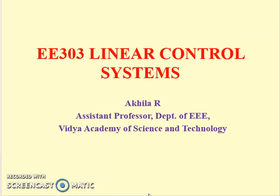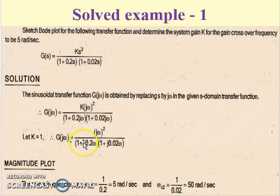Good evening and welcome to the video about Bode plot. In this video, we will work through a solved example. We will sketch a Bode plot for the following transfer function and determine the system gain K for the gain crossover frequency to be 5 radians per second. The transfer function G(s) equals K times s squared divided by (1 + 0.2s) times (1 + 0.02s).